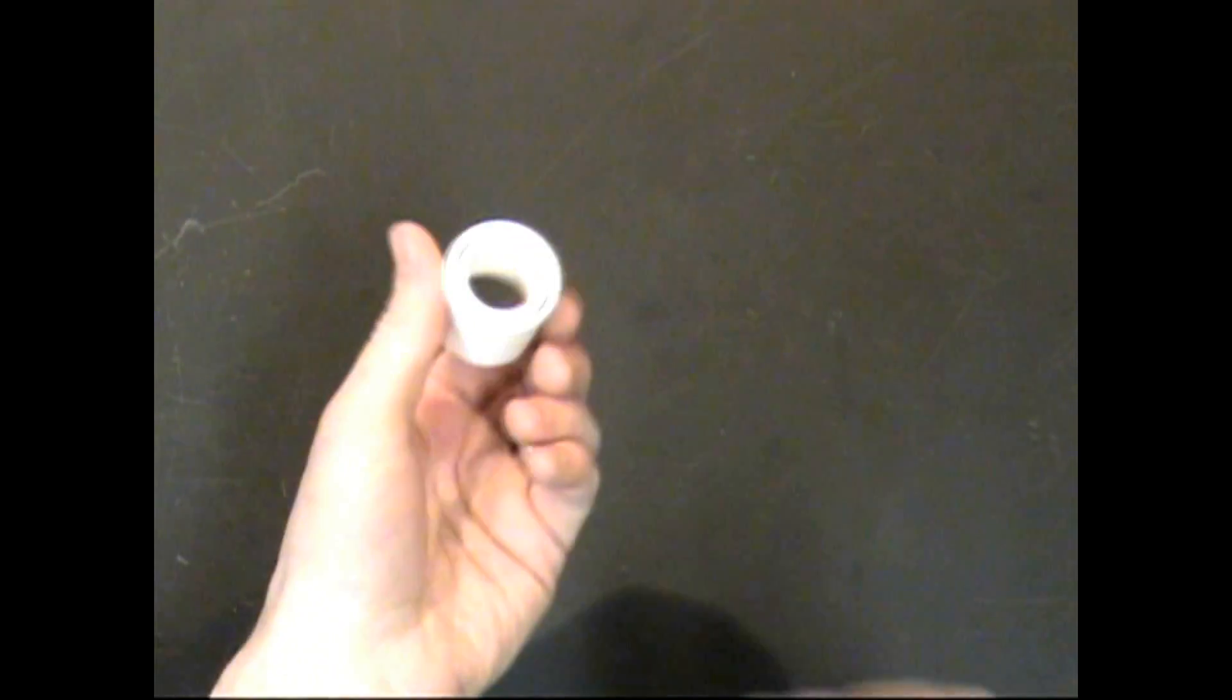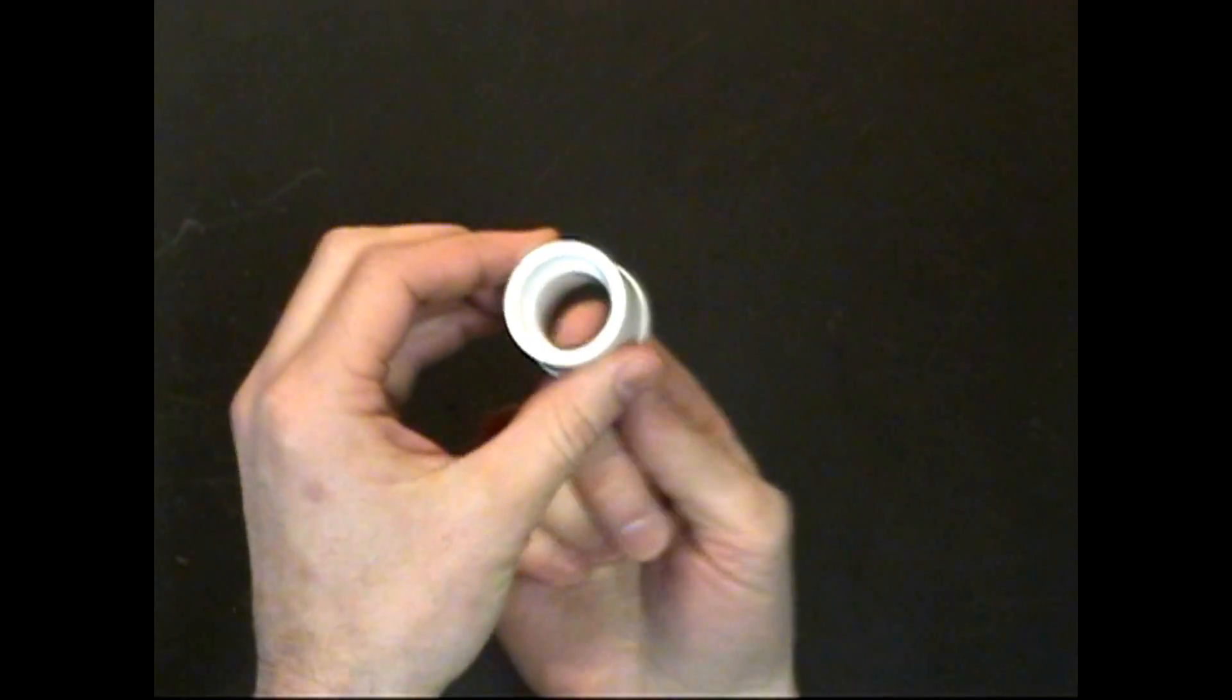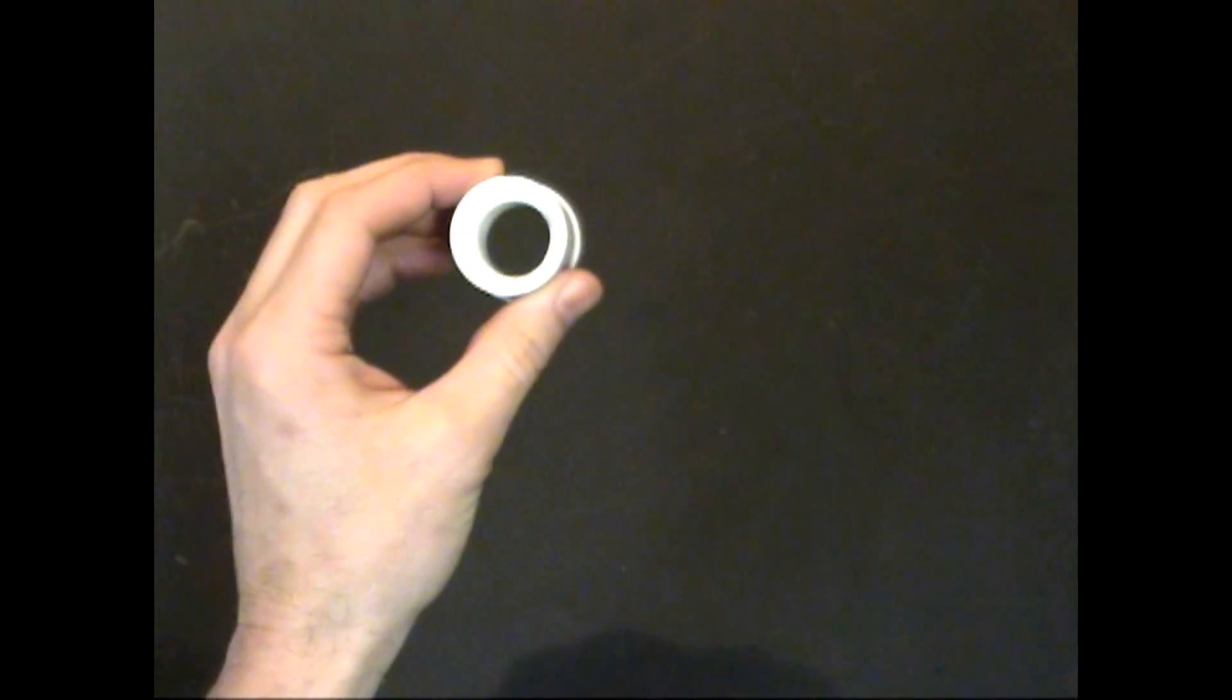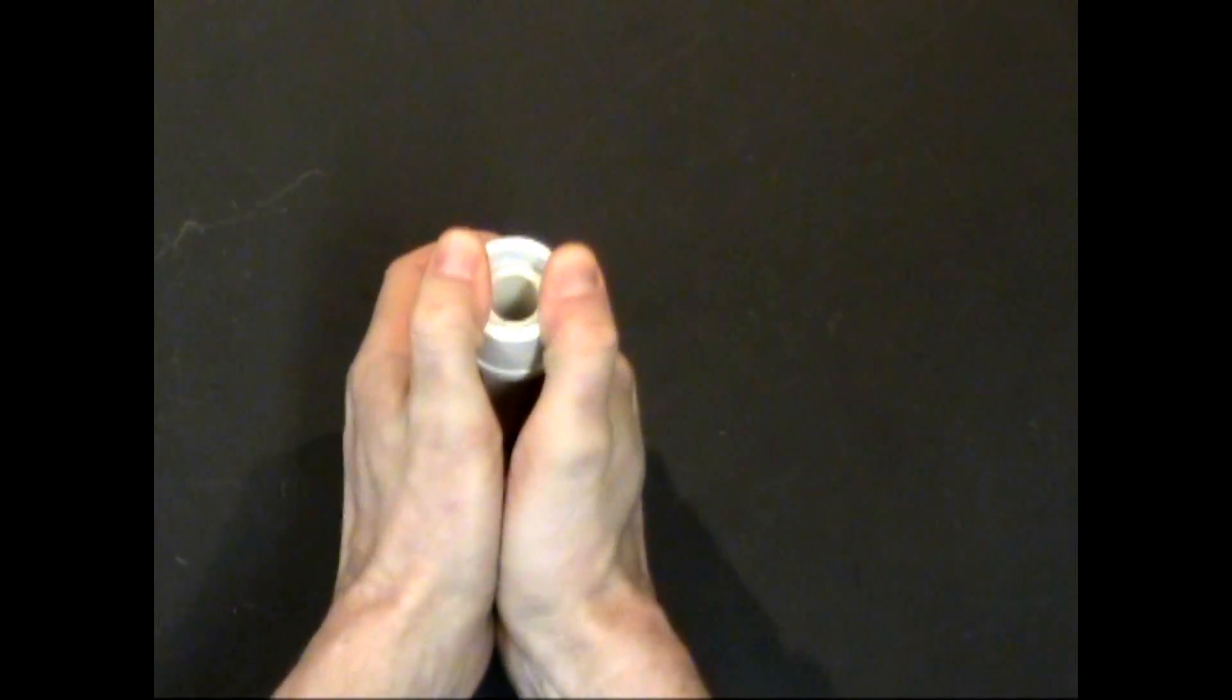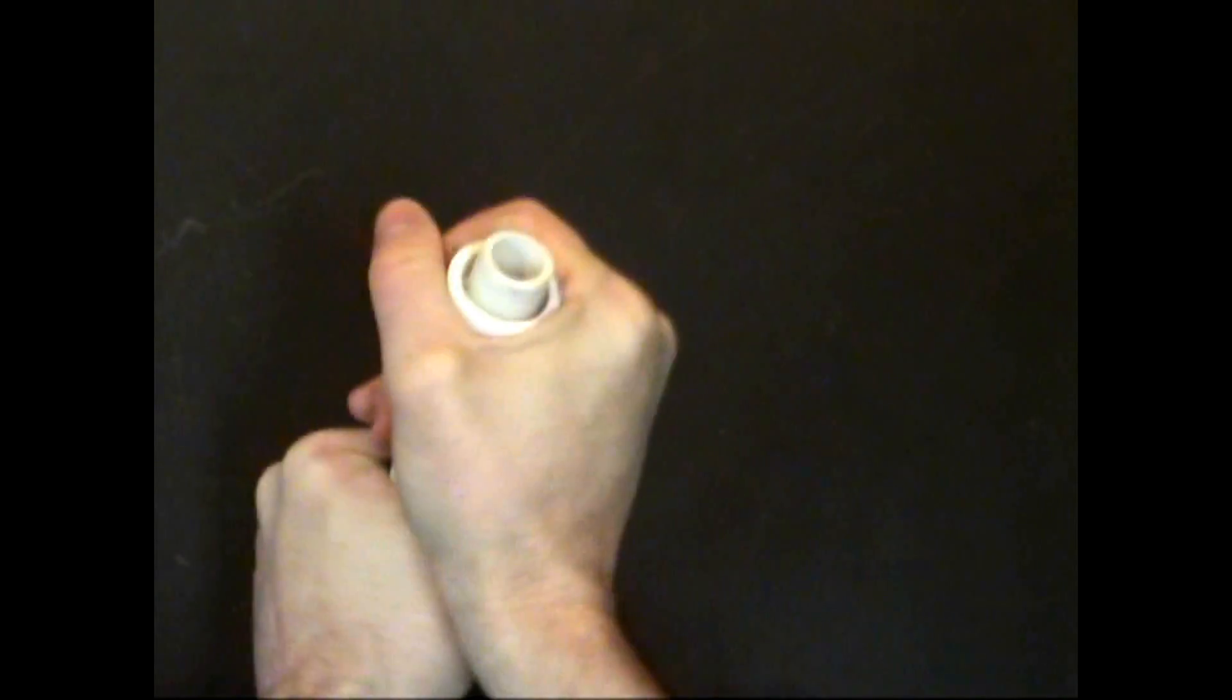Alright, the first step is to take a 1 inch to 1 half inch reducer fitting and remove the ridge that prevents the half inch pipe from sliding all the way through the reducer. This is easily accomplished with a small pocket knife blade. Now the half inch pipe, which is going to be the barrel, can slide through the reducer fitting.